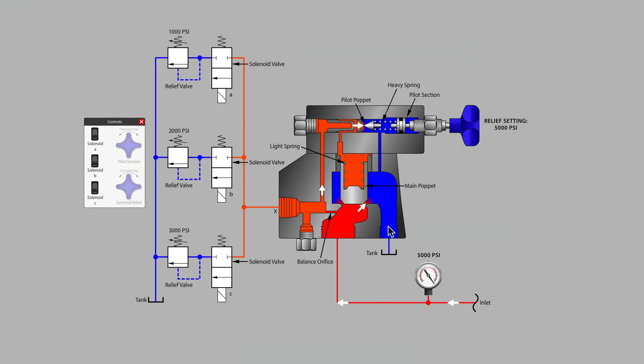So in this case our system pressure is set at 5000 psi. That's the setting of the pilot section that's bolted directly to the main relief valve. Leaving port X, if we turn on the solenoid for the top branch...